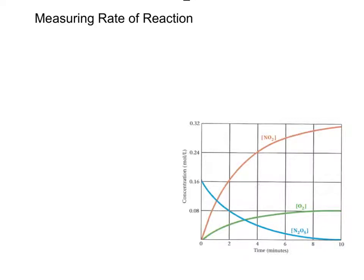In this chapter, we're going to be talking about reaction rates. The rate of a reaction is how fast a reaction occurs. But what exactly does that mean? The rate of reaction is a positive quantity that expresses how the concentration of a reactant or product changes over time.